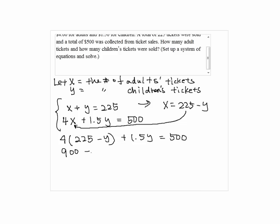So we have 900 minus 4y plus 1.5y equals 500. So negative 2.5y equals negative 400. So y is 160.